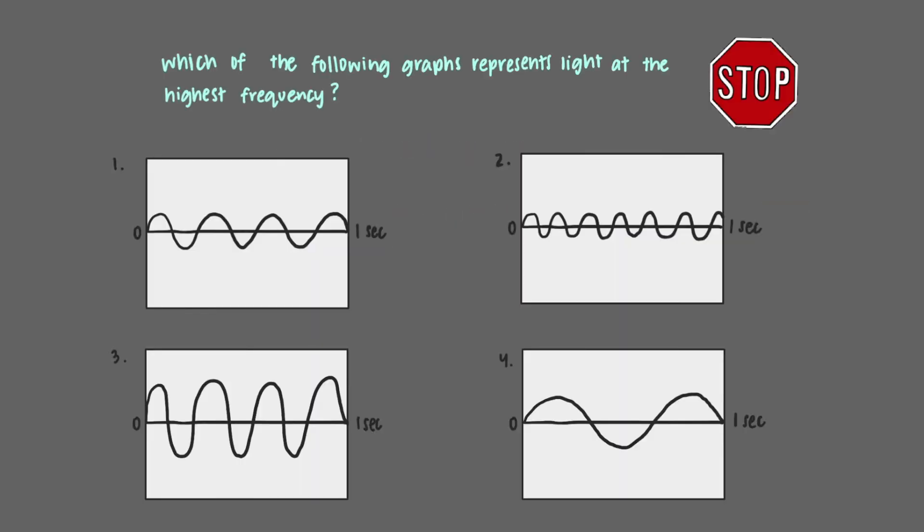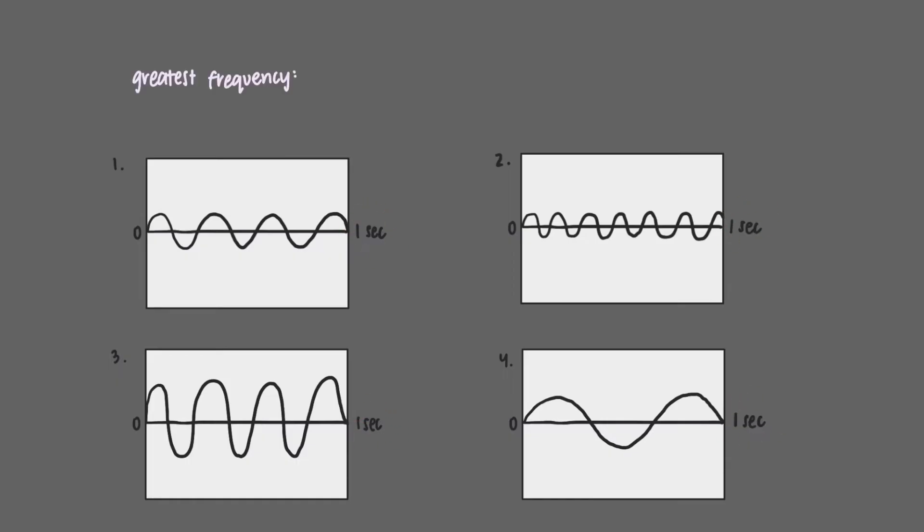Which of the following graphs represents light at the highest frequency? Assume that all of these waves have the same speed, c. Since all of the graphs have equal timeframes, the correct answer is the graph that has the most wavelengths over that period of time, which makes this the correct graph.